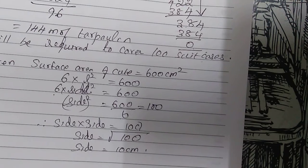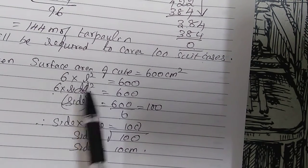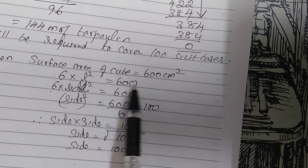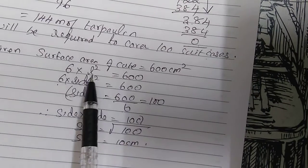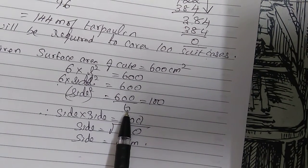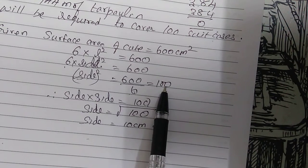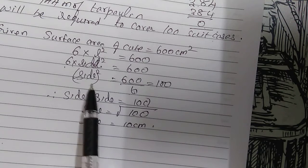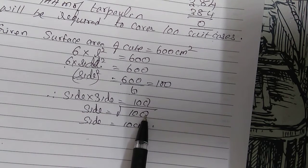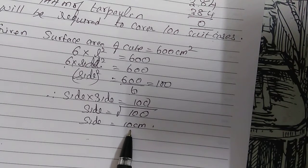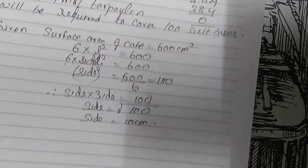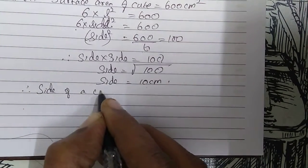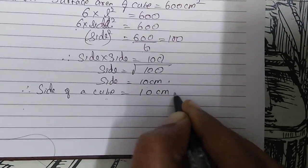In this sum, the surface area was given and we were asked to find the side of the cube. Using 6L² = 600, we get L² = 100, so the side = √100 = 10 cm. Therefore, the side of the cube is 10 cm.